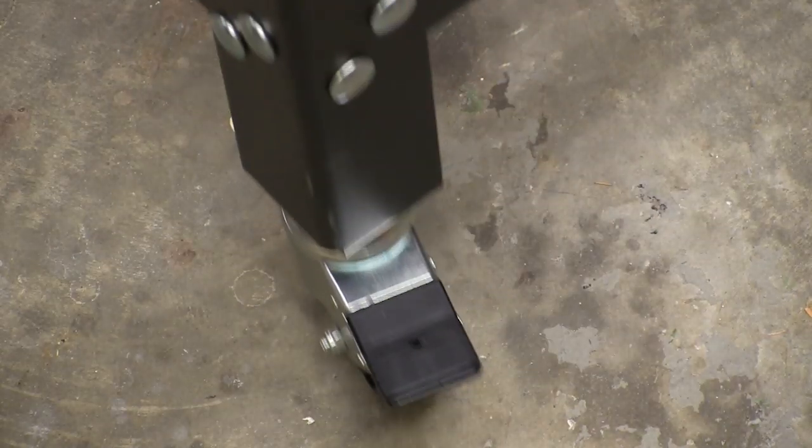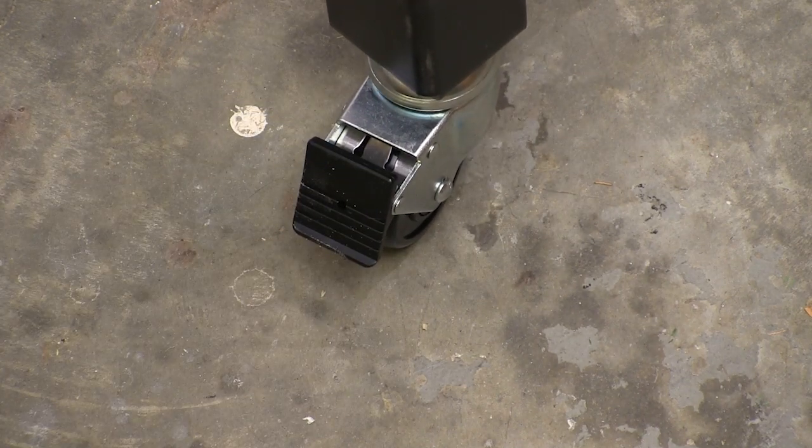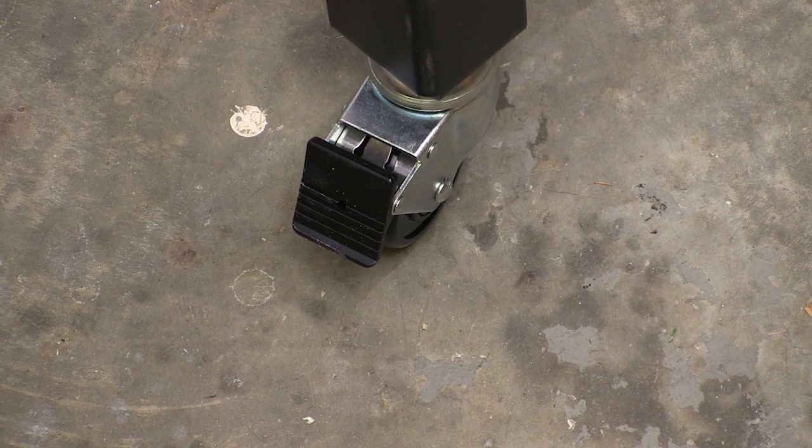These casters roll and swivel around very easily so you can put the table where you want it. And then when you don't want it to move anymore, step on that, and it locks the wheel and the swivel together. When you want to move again, flip that lever back up, and away it goes.